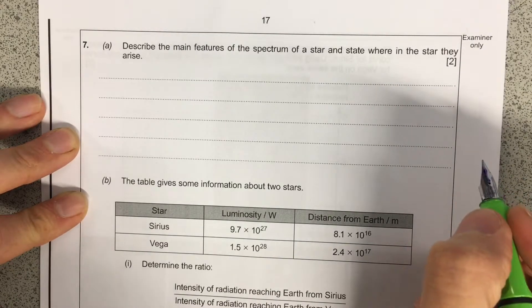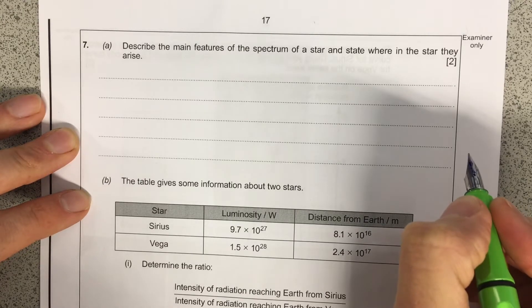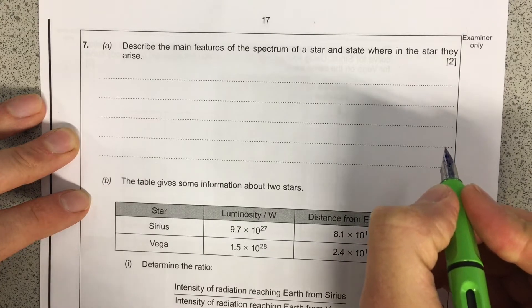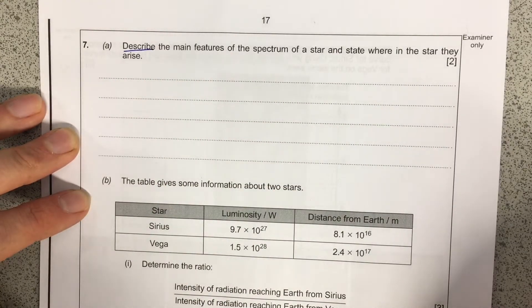Hi everyone, I'm going to work you through a unit 1 question from topic 6, the radiation and stars. And this question starts off by asking us to describe, that's my key term, describe the main features of the spectrum of a star and state where they come from.